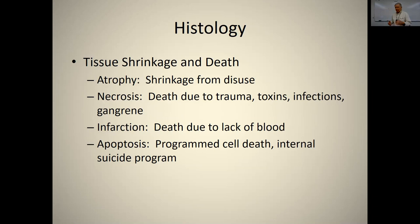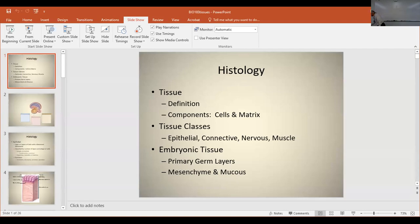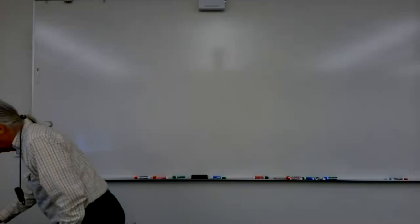Stem cells: embryonic stem cells are totipotent — they can become anything because no genes are turned off. Adult stem cells can become one type of cell. For example, cells in red bone marrow are pluripotent — they can become any blood cell: red blood cells, white blood cells, or megakaryocytes that make platelets. A fibroblast can only become a fibrocyte, and an osteoblast can only become an osteocyte. That covers Chapter Five on tissues — we'll stop here and go on to the next chapter.